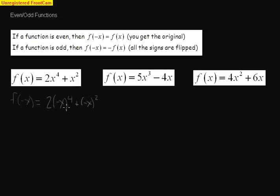And if I look at that, I know that any time I have something to the fourth power that's four negatives, that's going to wind up canceling out. And I'm going to wind up with, again, 2x to the fourth. And then plus, if I square something that's negative, that's a negative times a negative, I'm going to wind up with x squared. So this is the exact same thing as the original function. Therefore, we know that this is even.